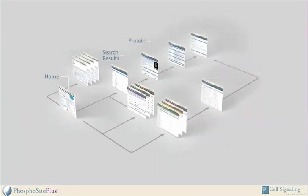Upon selecting a protein, users are taken to a protein page that summarizes information about its post-translational modifications, protein function, structure, domain organization, and modification sites. Clicking on a specific site takes users to an individual site page that presents a summary of curated information about that site in the literature and a bibliography for all site-specific references. The curated info page presents specific information reported in a single reference about a single site, presenting the most granular information in PhosphoSite, including experimental details and the biological importance and regulation of a single site.